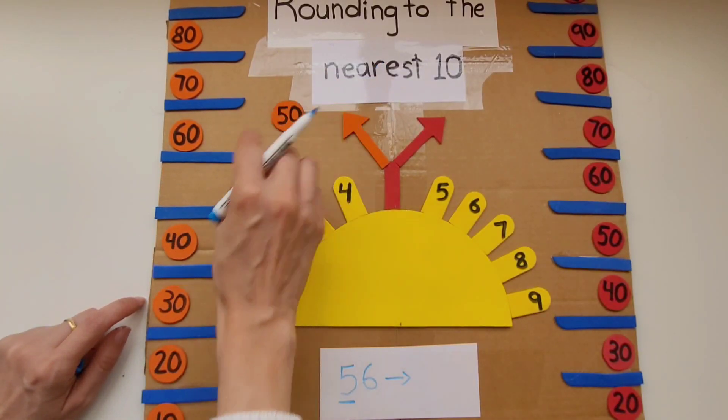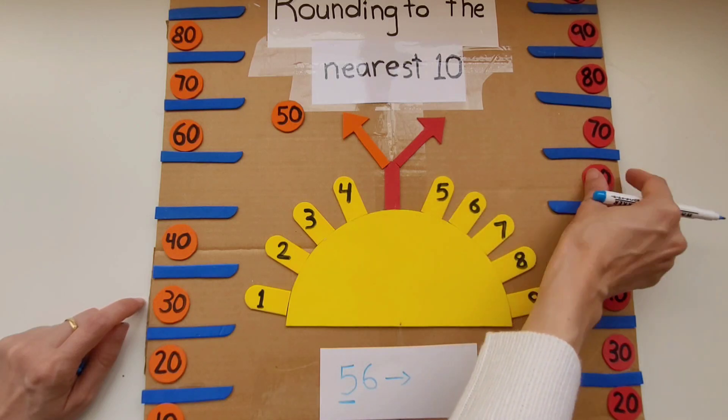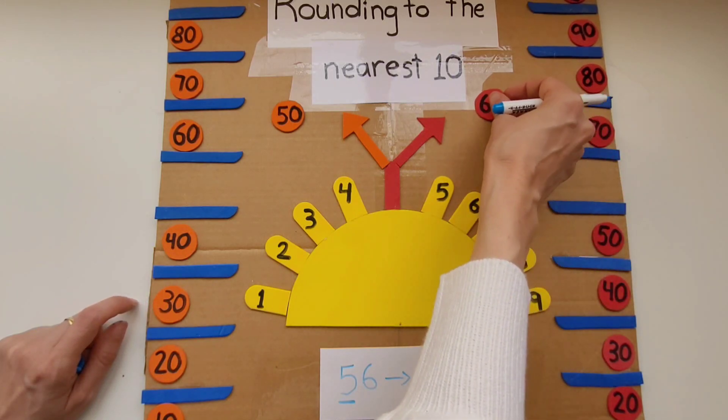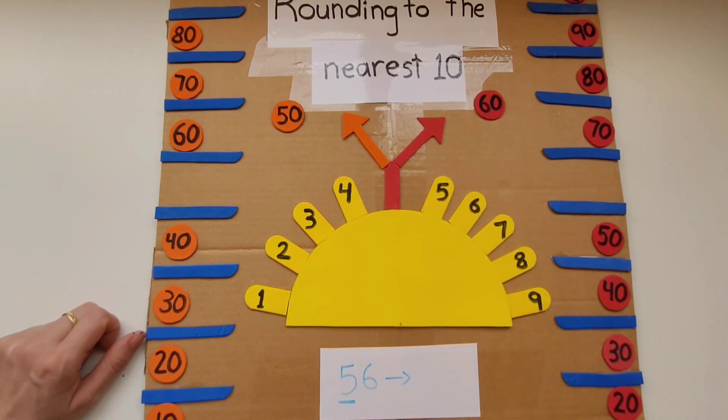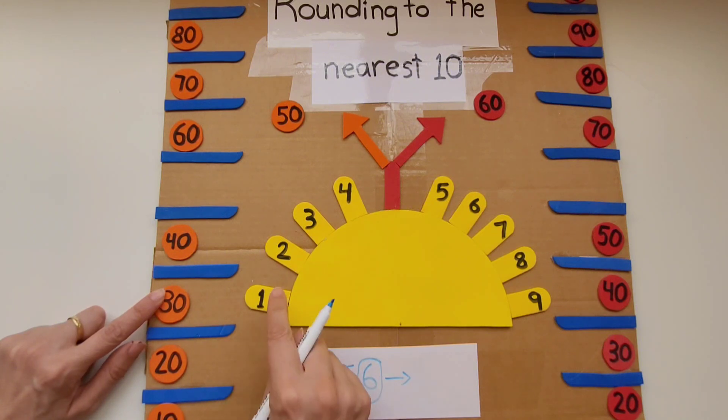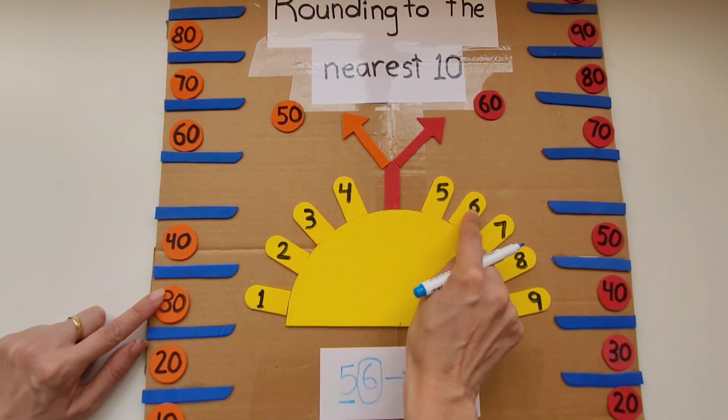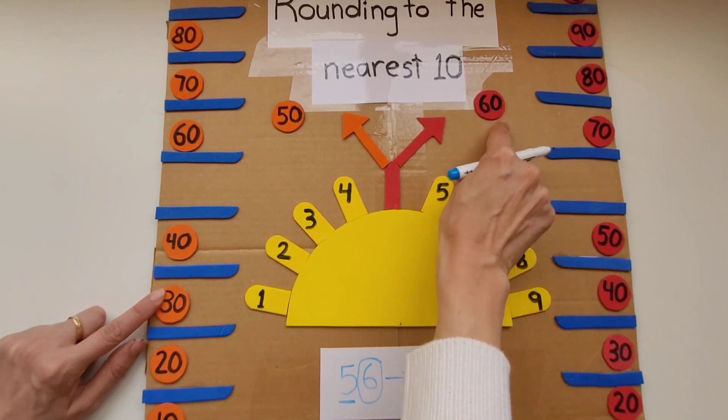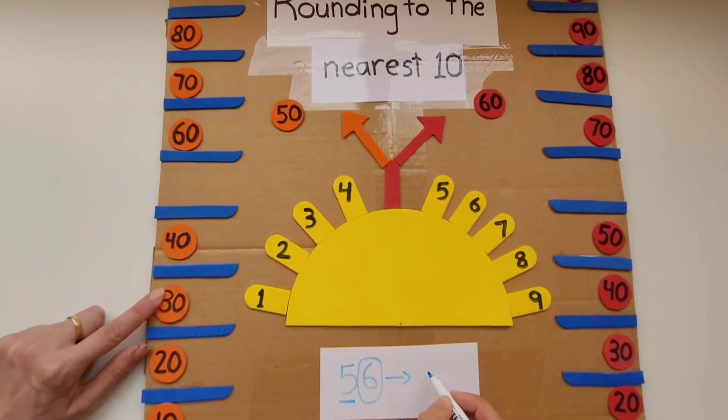Let's start out with 56. First we underline the ten. It's a 50 so we're going to grab a 50. We're going to go across the board to the other side which is a ten higher. It's a 60. Then we're going to count the ones. We have a six so we're going to count to six. Six is on the right side of the board so we round up to 60.